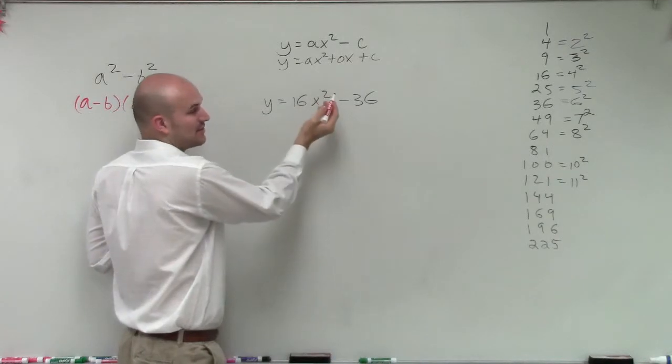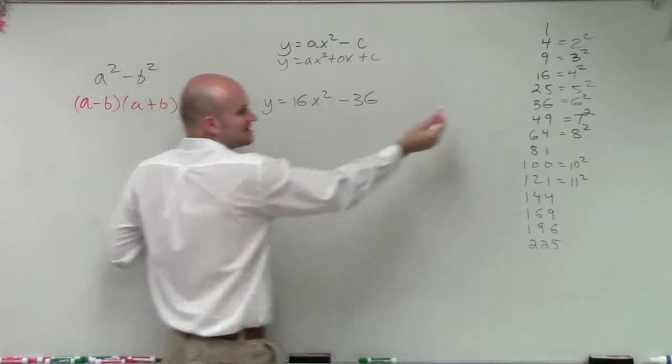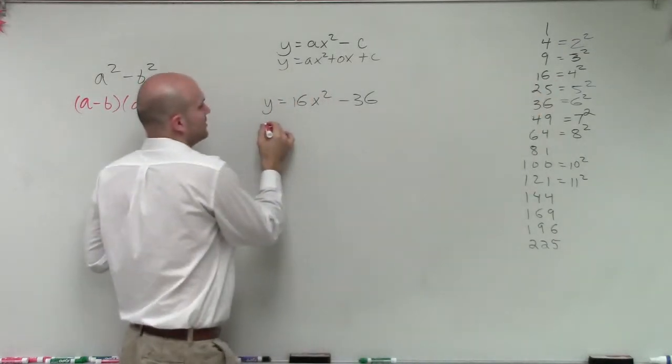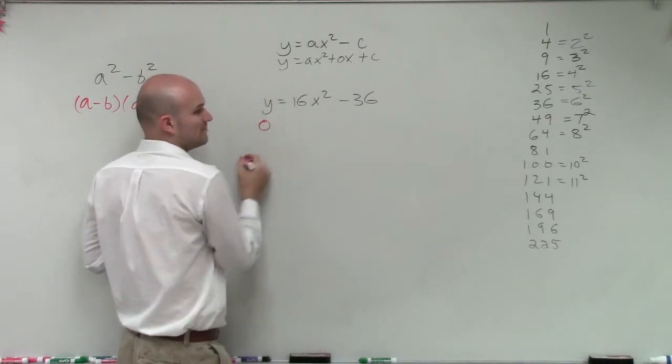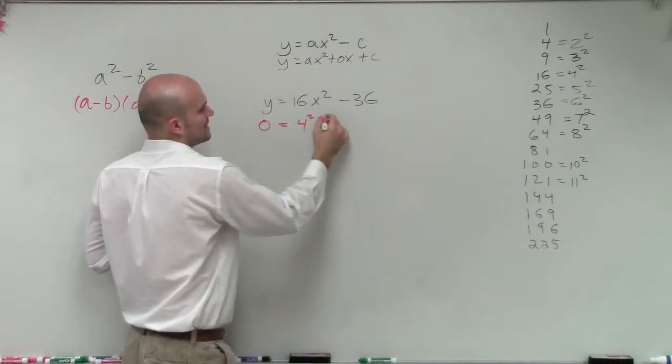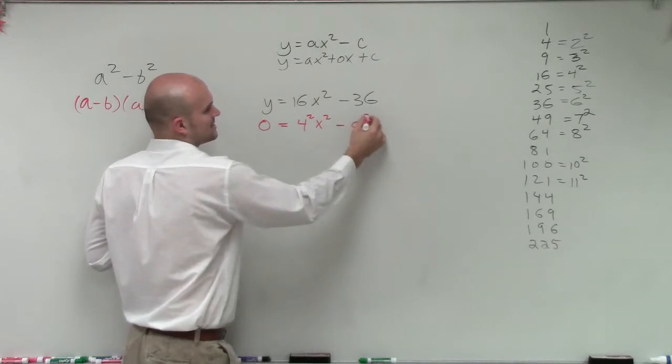And then I know x squared can be written as x squared already. And then 16x squared can be written as 4x squared. So since we're going to solve this, I'll have my output value 0, so therefore, I have 4 squared times x squared minus 6 squared.